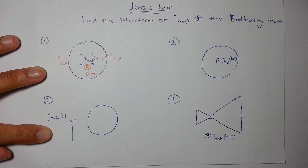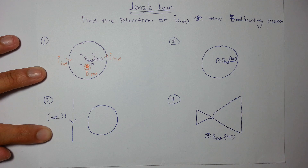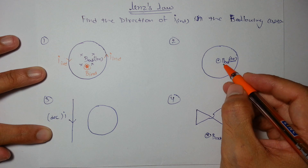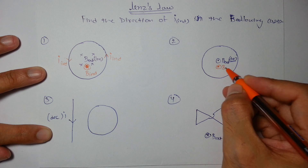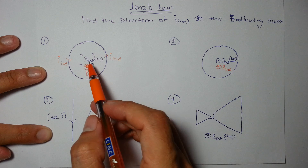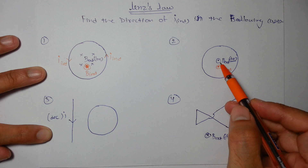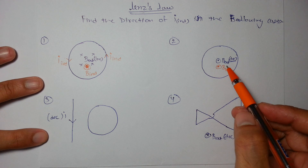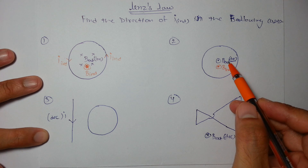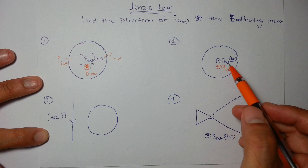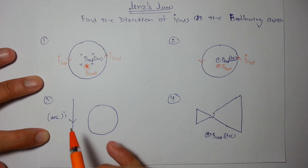The external field is out of the plane of paper but decreasing. To oppose this decrease, the induced field will also be in the outward direction, trying to support and maintain its value. Therefore, the induced current will be clockwise.